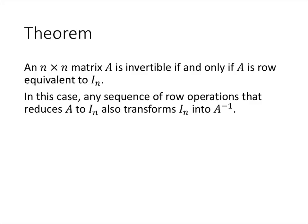So what are elementary matrices good for? There's a theorem that tells us exactly when a matrix is invertible and how to find its inverse. The theorem says a square matrix A is invertible if and only if A is row equivalent to the identity matrix — meaning it can be row reduced to the identity. Furthermore, any sequence of row operations that reduces A to the identity will also transform the identity matrix into A inverse. So if we keep track of all the row operations taken to transform A into the identity and perform those same steps in the same order, we will transform the identity into A inverse.